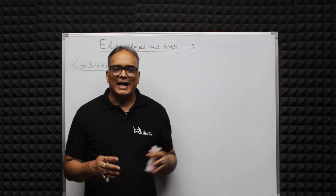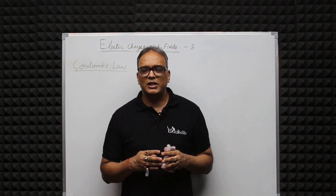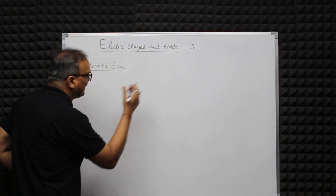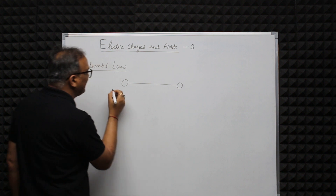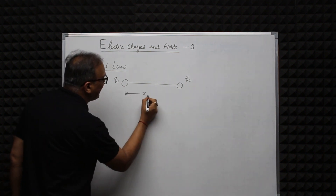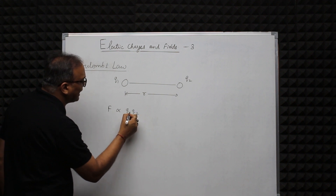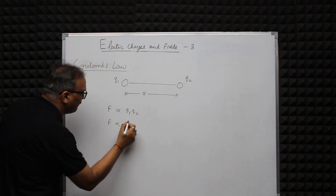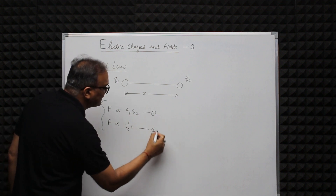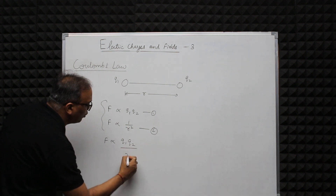Coulomb's Law states that the force between two point charges varies inversely as the square of the distance between the charges, and is directly proportional to the product of the magnitudes of the two charges, and acts along the line joining the two charges. So if we have two point charges q1 and q2 separated by a distance r, the force F is directly proportional to q1 times q2 and inversely proportional to r squared. Combining both, F is proportional to q1·q2 over r².